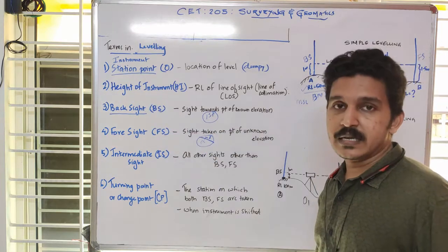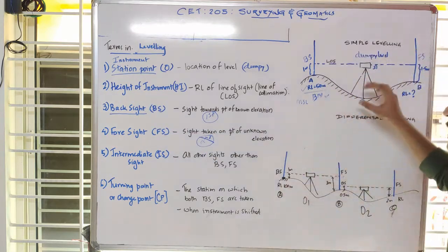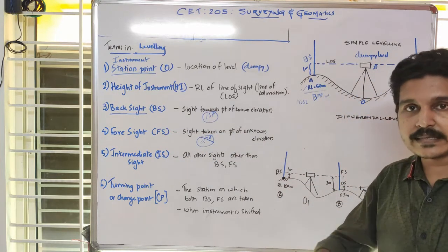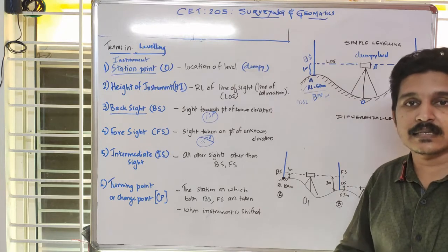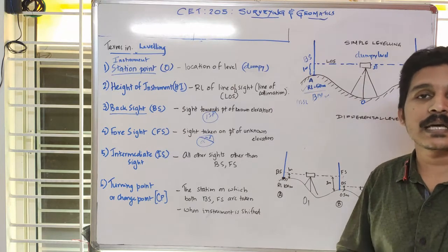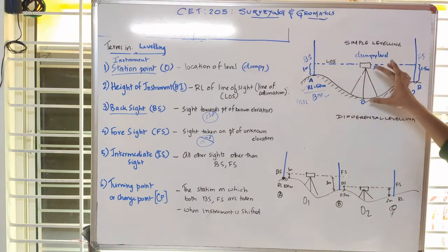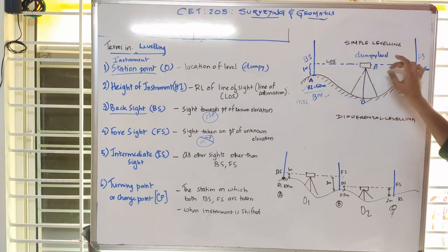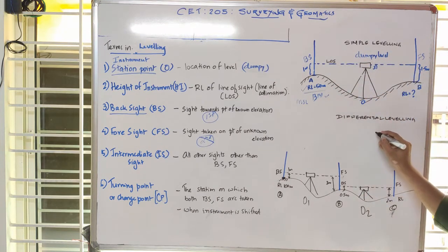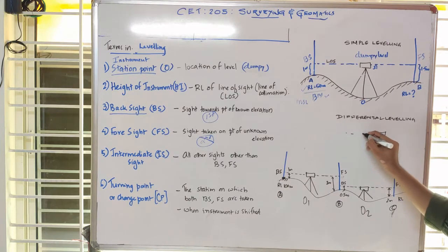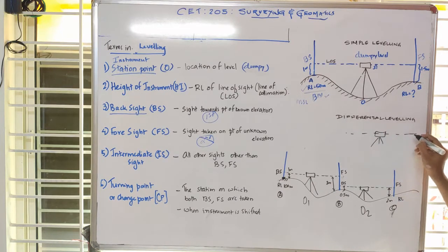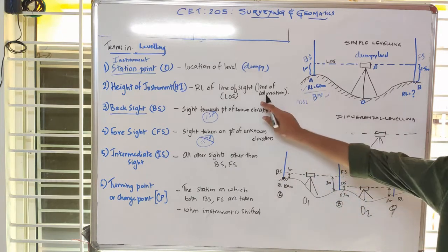Height of instrument: the instrument height is fixed because we have legs adjusted to the tripod. The height of instrument refers to the instrument height, and we focus on the line of collimation, also called the line of sight.